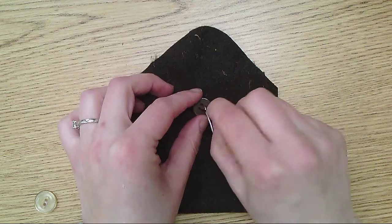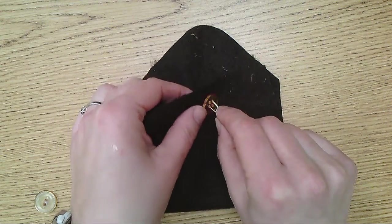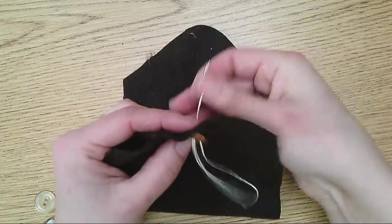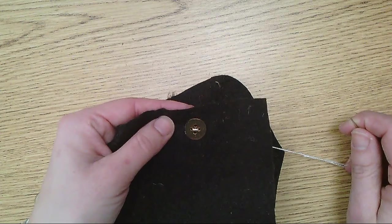Then I like to go diagonal for my next one. I'm going to go across to the button on the opposite side and just go through it and pull it. See how I made a straight line across?